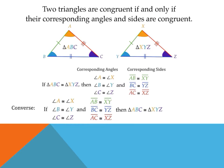Let's analyze this by conditional statement. Two triangles are congruent if and only if their corresponding angles and sides are congruent. If triangle ABC is congruent to triangle XYZ, then all pairs of corresponding parts are congruent. The converse: if all corresponding parts are congruent, then the two triangles are congruent. Therefore, our biconditional is true for both the conditional and the converse.